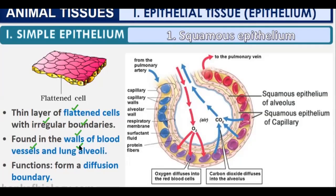The walls of blood vessels are formed of squamous epithelium. Its function is to form a diffusion boundary — like a semi-permeable membrane — enabling diffusion. It is found in the walls of blood vessels and lung alveoli.